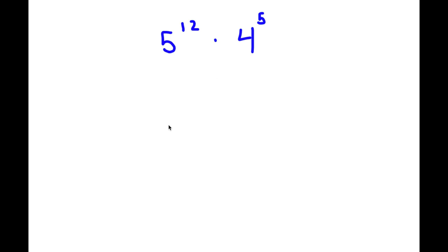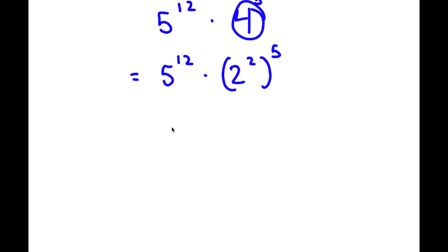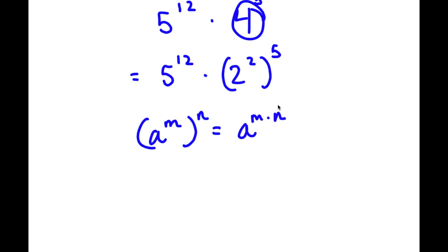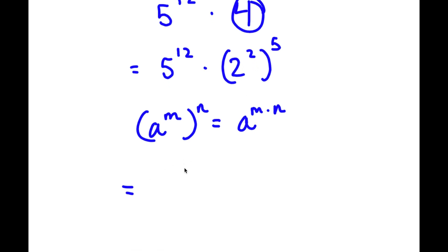In this problem, I have 5 to the power of 12 times 4 to the power of 5. To solve this, I'm going to first rewrite 4 as 2 to the power of 2. So now I have 5 to the power of 12 times 2 to the power of 2 to the power of 5. If I have something in the form a to the power of m to the power of n, this equals a to the power of m times n. So 2 to the power of 2 to the power of 5 equals 2 to the power of 10. Now I have 5 to the power of 12 times 2 to the power of 10.